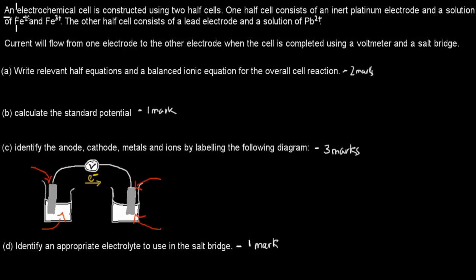Once you've paused the video, try to attempt the question, and when you're ready, press play, and I'll walk you through the actual answer. So I'll read the question now. It says, an electrochemical cell is constructed using two half cells. One half cell consists of an inert platinum electrode, and a solution of Fe2+ and Fe3+. The other half cell consists of a lead electrode, and a solution of Pb2+. Current will flow from one electrode to the other electrode when a cell is completed using a voltmeter and a salt bridge. Part A: Write relevant half equations and a balanced ionic equation for the overall reaction. That's worth two marks. Part B: Calculate the standard potential. That's worth one mark.